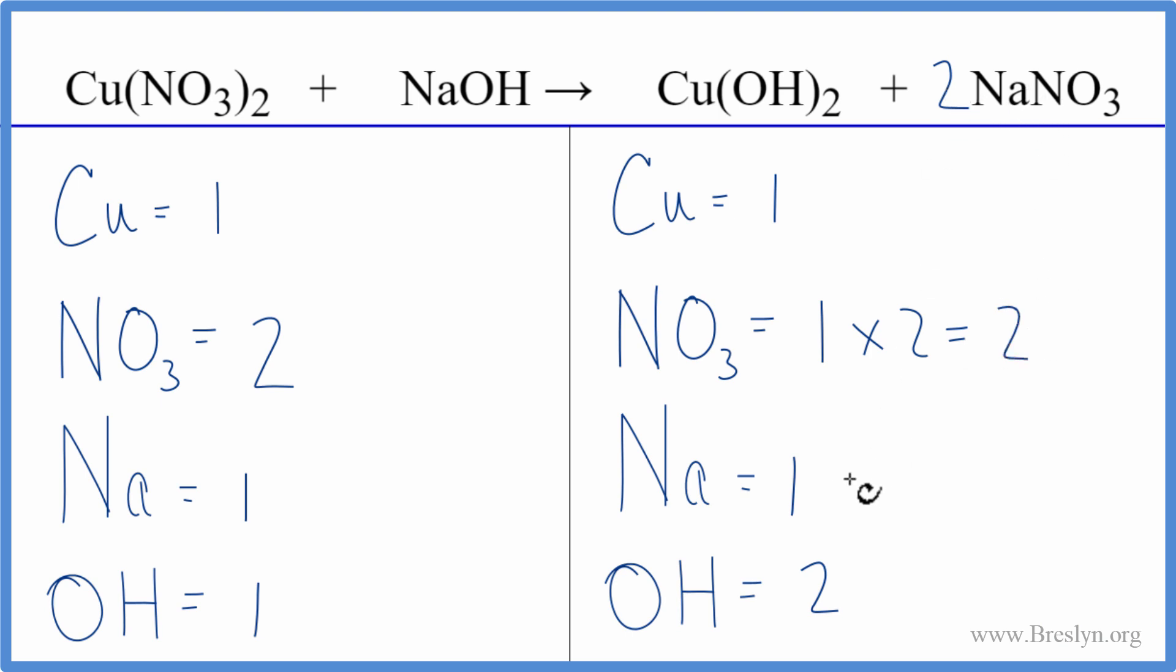One sodium times two, and we have two sodiums. Might as well balance the sodiums. I think that will balance the hydroxides as well. We have two here and one here. Put a coefficient of two in front of the sodium hydroxide. We have one hydroxide times two, so those are balanced.